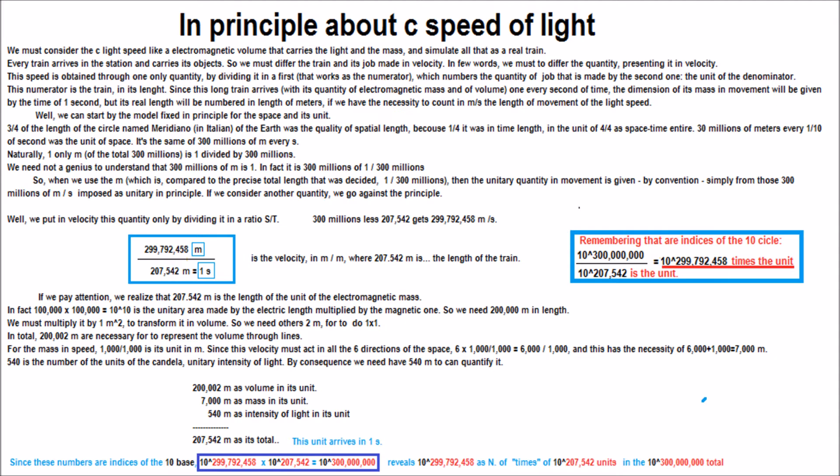207,542 is equal to 1 second. Afterward, remembering that our indices of the 10 cycle, we have a ratio between powers and we have the number of the times of the unit. If we pay attention, we realize that 207,542 m is the length of the unit of the electromagnetic mass.